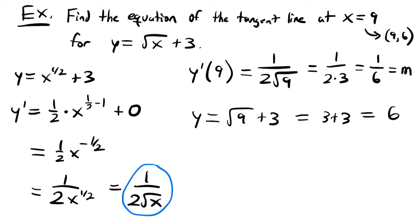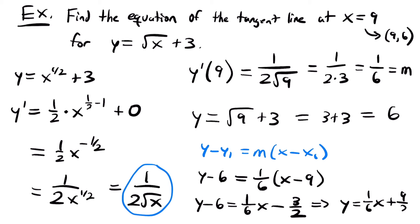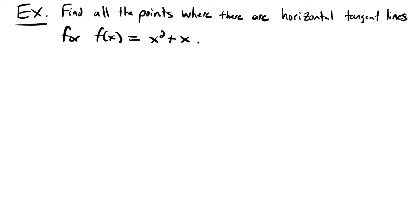Now we have everything we need. Using point-slope form y minus y1 equals slope times (x minus x1): y minus 6 equals 1/6 times (x minus 9). Distributing: y minus 6 equals 1/6 x minus 9 times 1/6, which is 3/2. Adding 6 to both sides: y equals 1/6 x plus 9/2. That is the equation of the tangent line for this function at the point x equals 9, or more specifically, the point (9, 6).